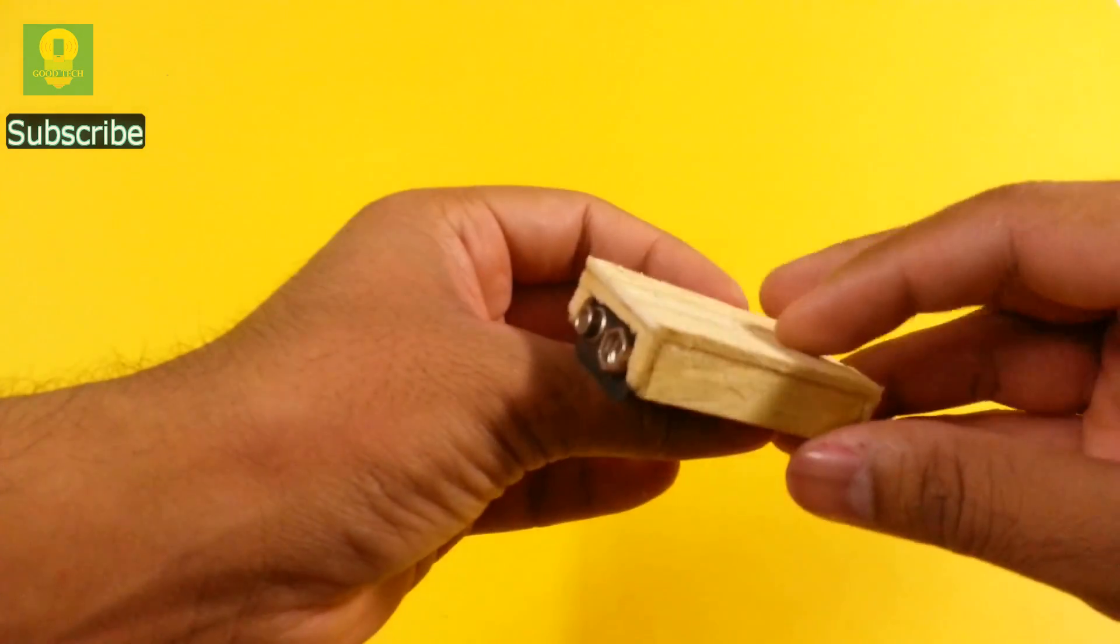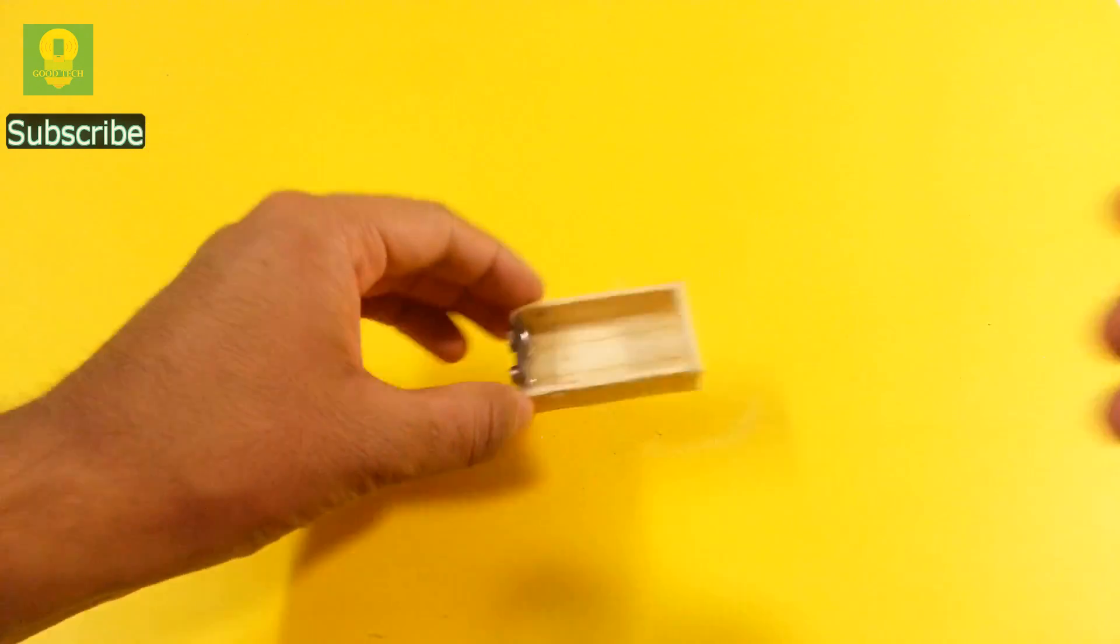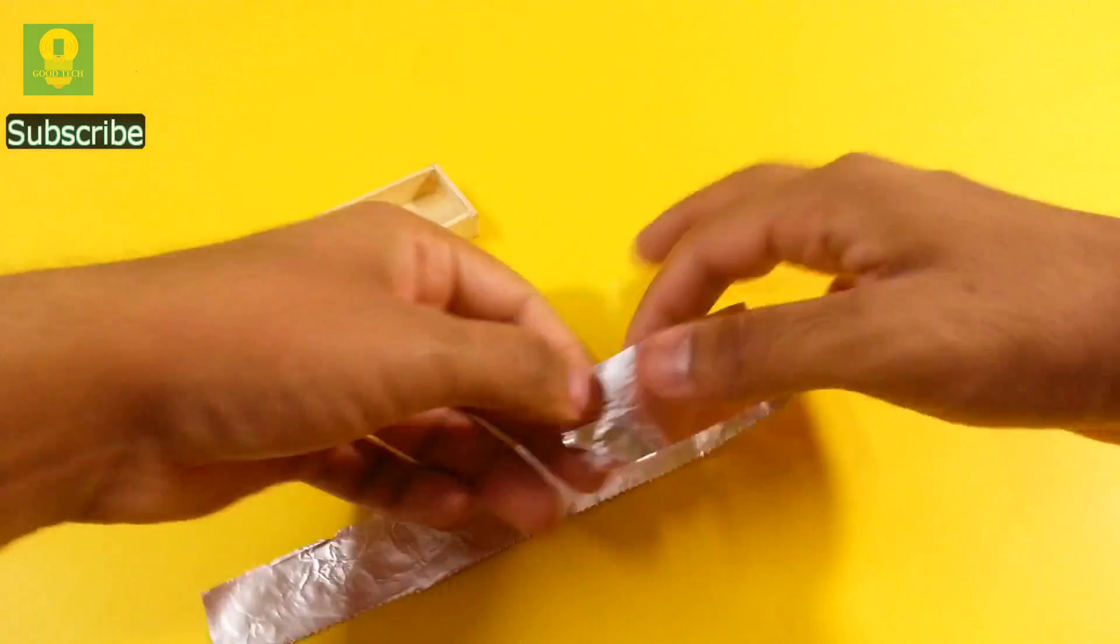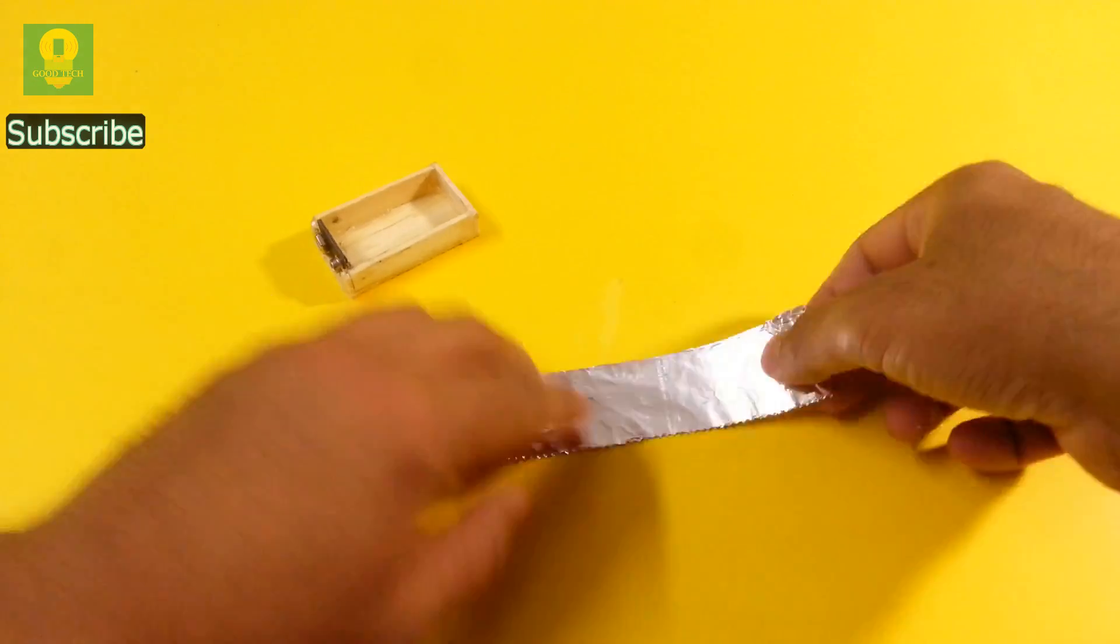Our cell holder is now almost ready. Take a piece of food wrapping foil and fold it to make the contact between the cells.